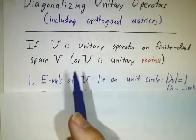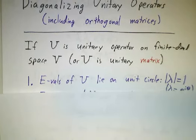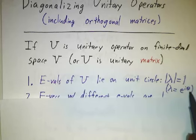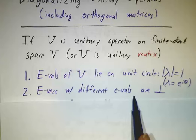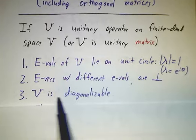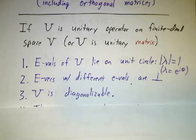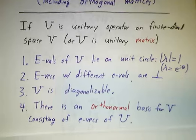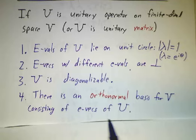Then, the eigenvalues of U, they're not real, but they lie on the unit circle. They can always be written as e to the i theta for some real value of theta. Eigenvectors with different eigenvalues are orthogonal. Unitary matrices are always diagonalizable. We'd never have to worry about power vectors. And finally, you could always find an orthonormal basis for your vector space consisting of eigenvectors of U.